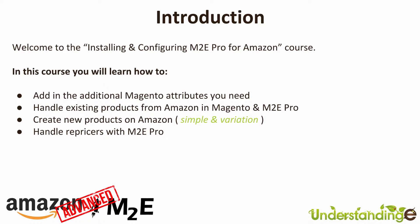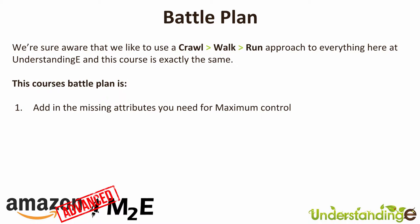For this course we have a specific battle plan. Up until now, myself and Dave use a very simple approach called crawl, walk, and run — to everything we do here at Understanding E. This course is exactly the same, but the key is you've already learned to crawl in the previous course. When you set up Amazon and M2e Pro within your Magento system, that was the crawl bit. Now it's time to learn how to walk and run with Magento, M2e Pro, and Amazon.